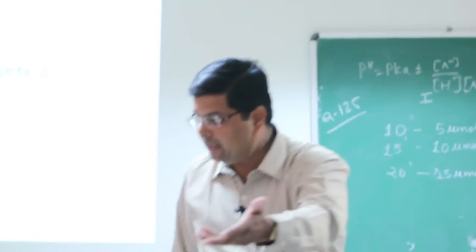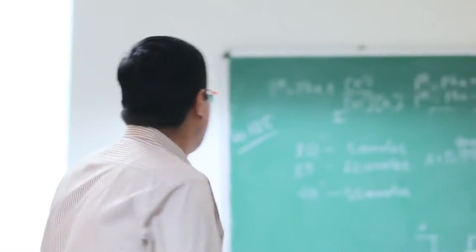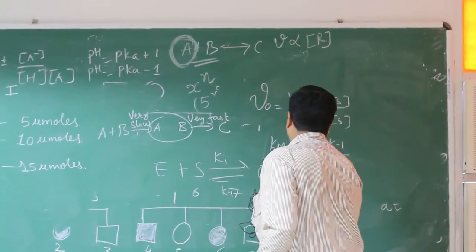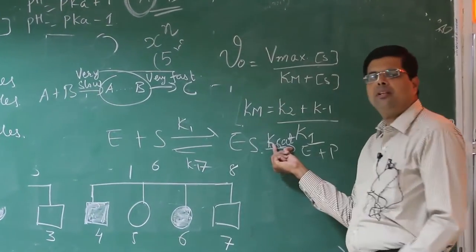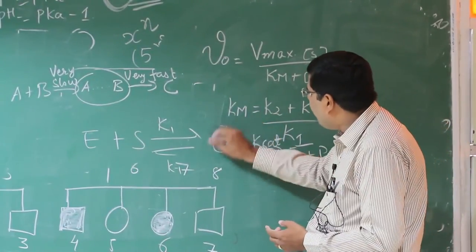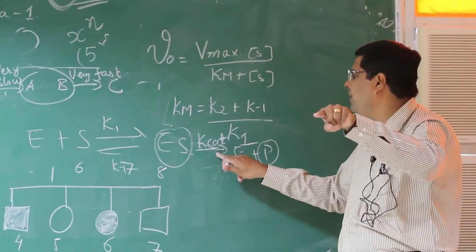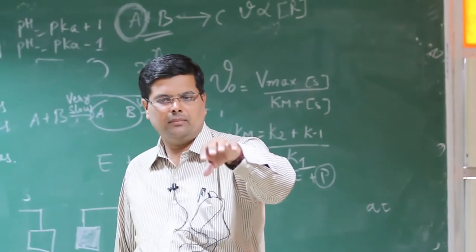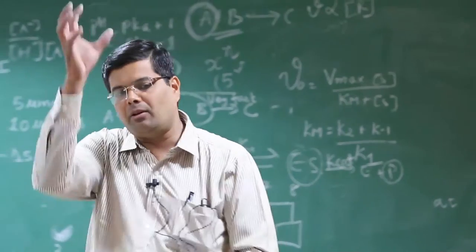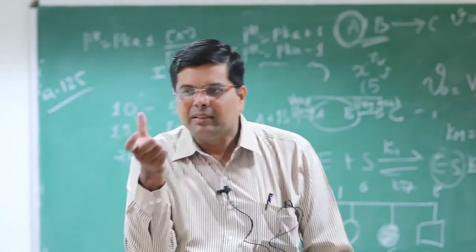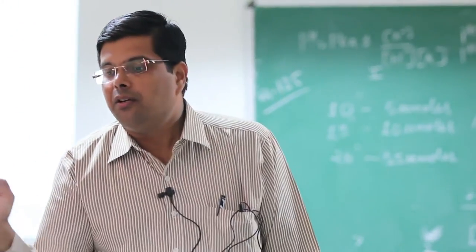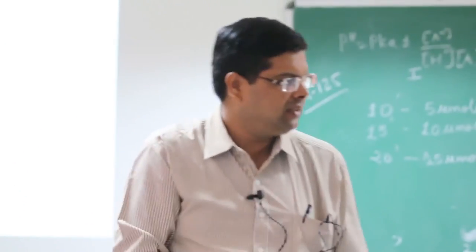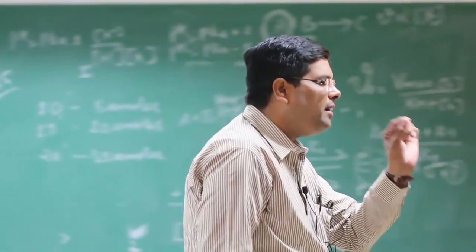From Kcat they can ask you the turnover number of the enzyme. K2 is equivalent to Kcat, which tells you how fast product formation takes place after the ES complex forms. Kcat does not tell you the affinity of the substrate towards the enzyme — that is KM. You may be given a set of substrates with Kcat and KM values and asked which substrate will be utilized more efficiently. In that case, you should use the ratio Kcat/KM, which is the specificity constant.